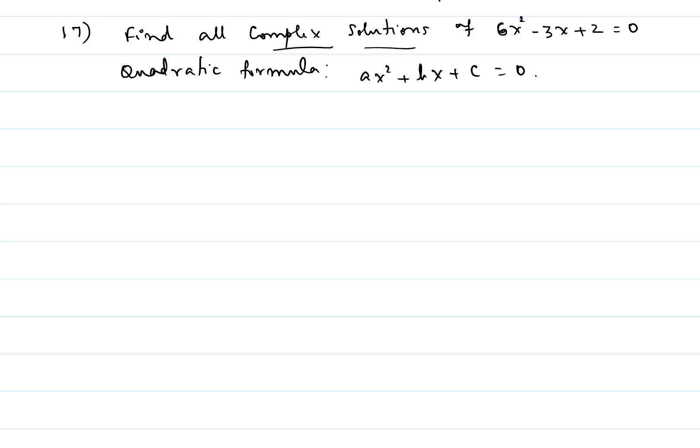Hi, in this video I will be showing you problem number 17 from practice exam 3 on chapters 6 and 7. Find all complex solutions of 6x² minus 3x plus 2 equal to 0.